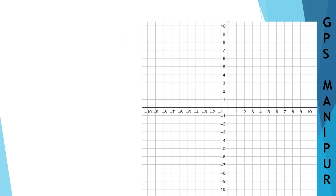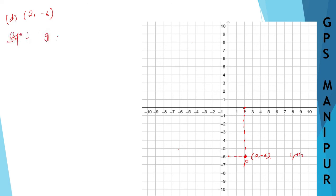Let us do the next question, Roman numeral D. D is (-2, -6). So 2 on the x-axis is here, and minus 6 on the y-axis is here. Join these two points — this is the point P, at x-axis and y-axis coordinates (-2, -6). This is first quadrant, second, third — and this is the fourth quadrant. So it lies in the fourth quadrant.